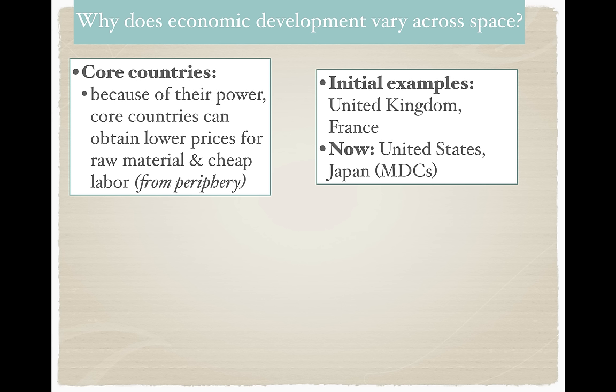Because of the power core countries have, they can obtain lower prices for raw material and cheap labor from the periphery. They can demand it, seek it, and have the ability to take advantage of it. They have access to transportation systems, communication, and money that allow them to take advantage of the materials of periphery countries. The initial examples provided — this was a theory from the 1960s — were the United Kingdom, France, and Holland. In modern day, we add the United States, Japan, Germany, most of Western Europe, and Australia as the most developed core countries.